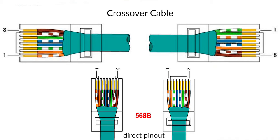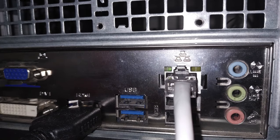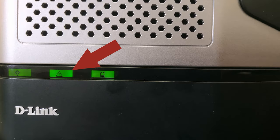If you choose to connect the storage directly to the computer, you'll need a network cable of a special type known as a crossover cable. For such connection type, you plug the other end of the network cable into the LAN port of your computer instead of the router. Turn on the storage system and wait until a LED light appears on the front panel — it means the server has booted.